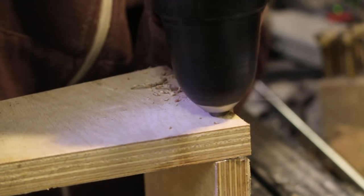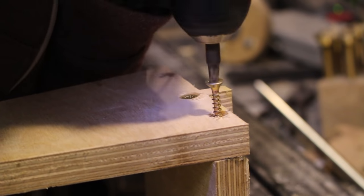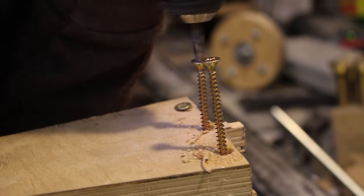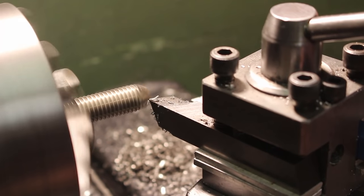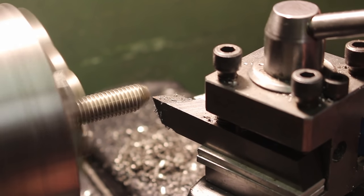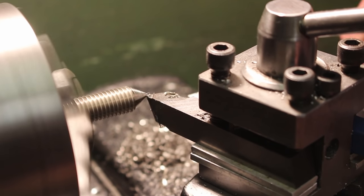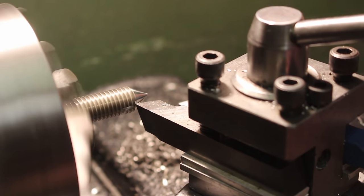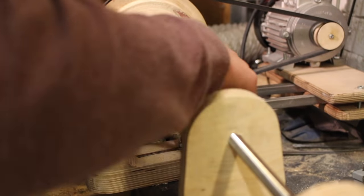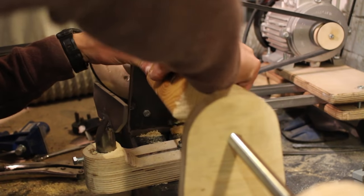Once the glue's set I drive a couple of screws through each corner to make sure everything's solid. I then use my metal lathe to turn a taper in the end of the M12 threaded rod. I can then put everything in place and I'm ready to turn small pieces of wood.